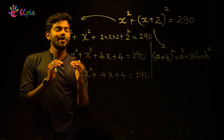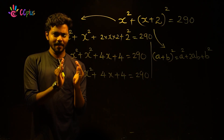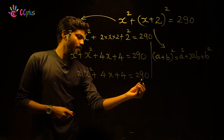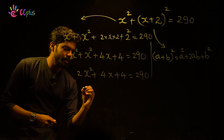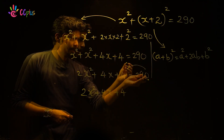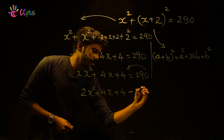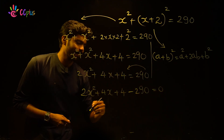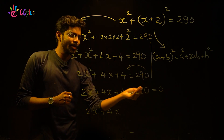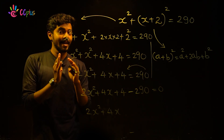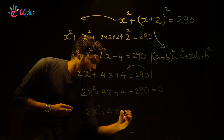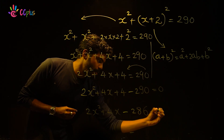Clear? So what is the equation? We want to solve this, so we bring 290 to the other side. That is: 2x squared plus 4x plus 4 minus 290 equals 0. And 4 minus 290 is minus 286.